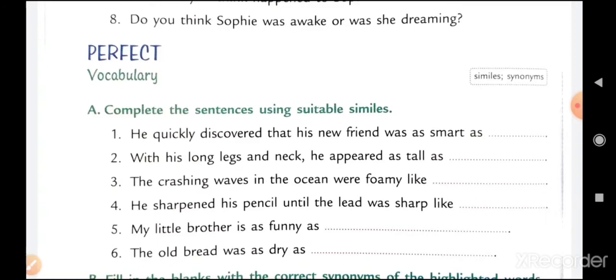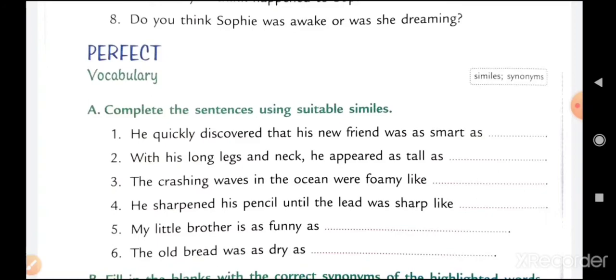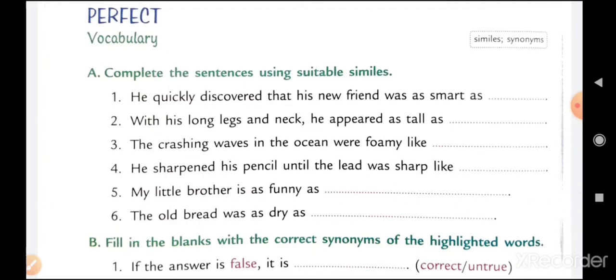Perfect vocabulary, similes, synonyms. Complete the sentences using suitable similes. He quickly discovered that his new friend was as smart as... With his long legs and neck he appeared as tall as... We can say as tall as a tree or we can say as tall as a building like that. The first one, let me do it for you. He quickly discovered that his new friend was as smart as...